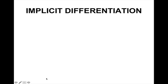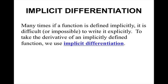So when you run into functions like that, we have to do implicit differentiation. Many times, if a function is defined implicitly, it is difficult or impossible to write it explicitly. Unlike my example from the previous slide, it would be easy to solve for y in that case, but most of the time it's not. To take the derivative of an implicitly defined function, we use implicit differentiation.